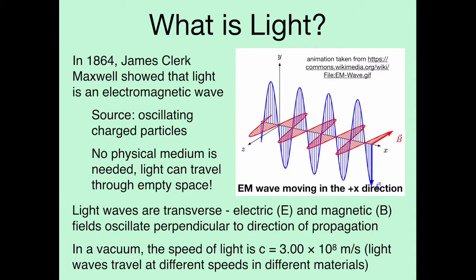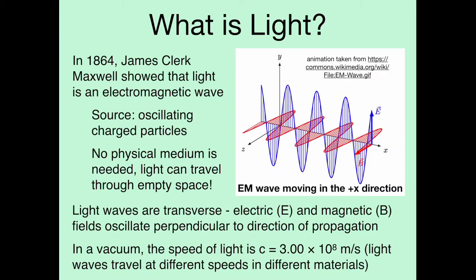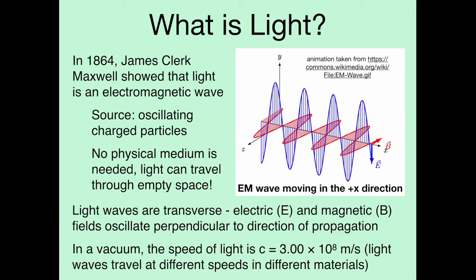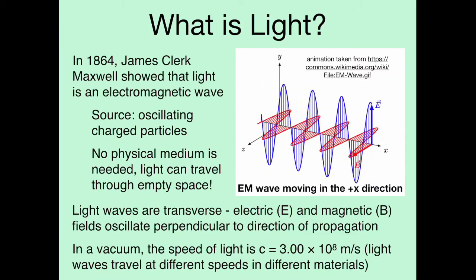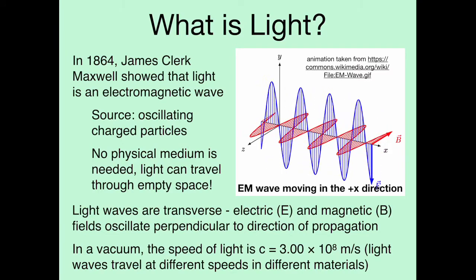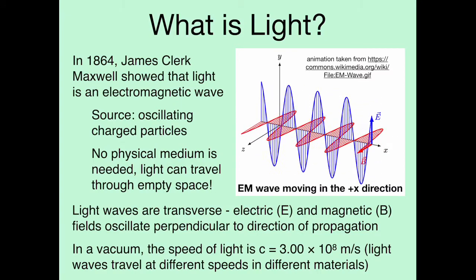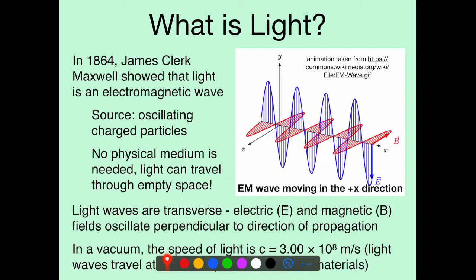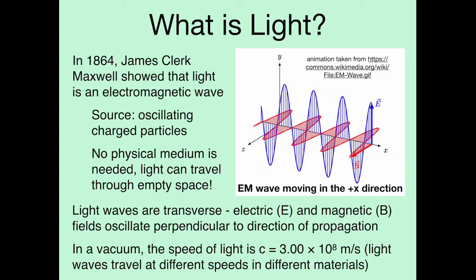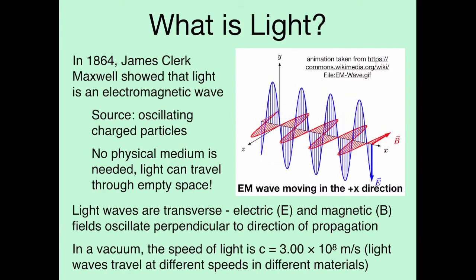Let's take a look at what this actually looks like in an animation. In blue, we have the electric field oscillating up and down along the y-axis. In red, we have the magnetic field B oscillating along the z-axis. And the wave itself is moving along the x-axis. This is a transverse wave because the wave is oscillating perpendicular to the direction of propagation. In a vacuum, the speed of light is given by c, equal to 3 × 10⁸ meters per second. Light waves will travel at slightly different speeds in different materials, so if light is traveling through water or glass, the speed will be a little bit different.